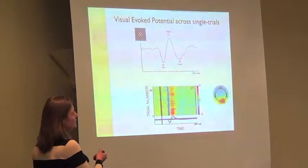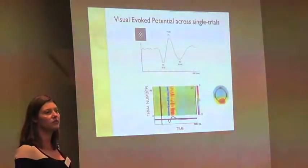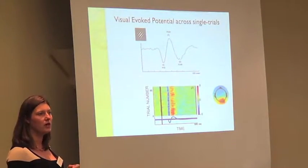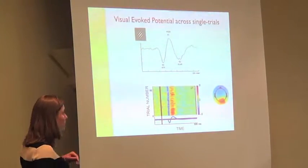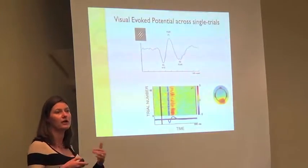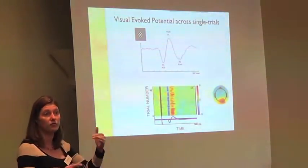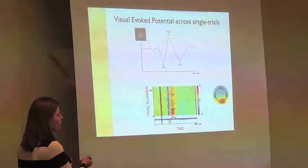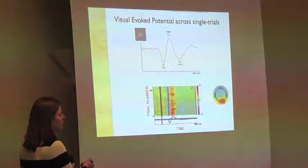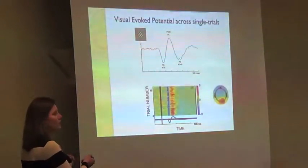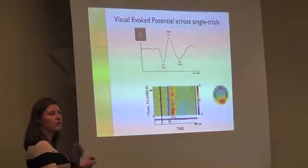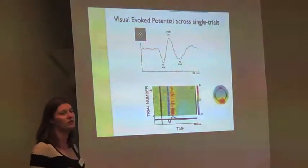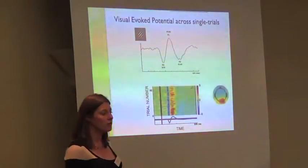With the ERP — which will be familiar to most of you — an ERP is created by averaging a number of single trials. But what people don't often look at is the underlying single trial activity that leads to the creation of that ERP. You can plot it like here, from trial 0 to trial 65-ish, and there's actually a lot of regular activity — a negative deflection followed by a positive deflection on every trial.